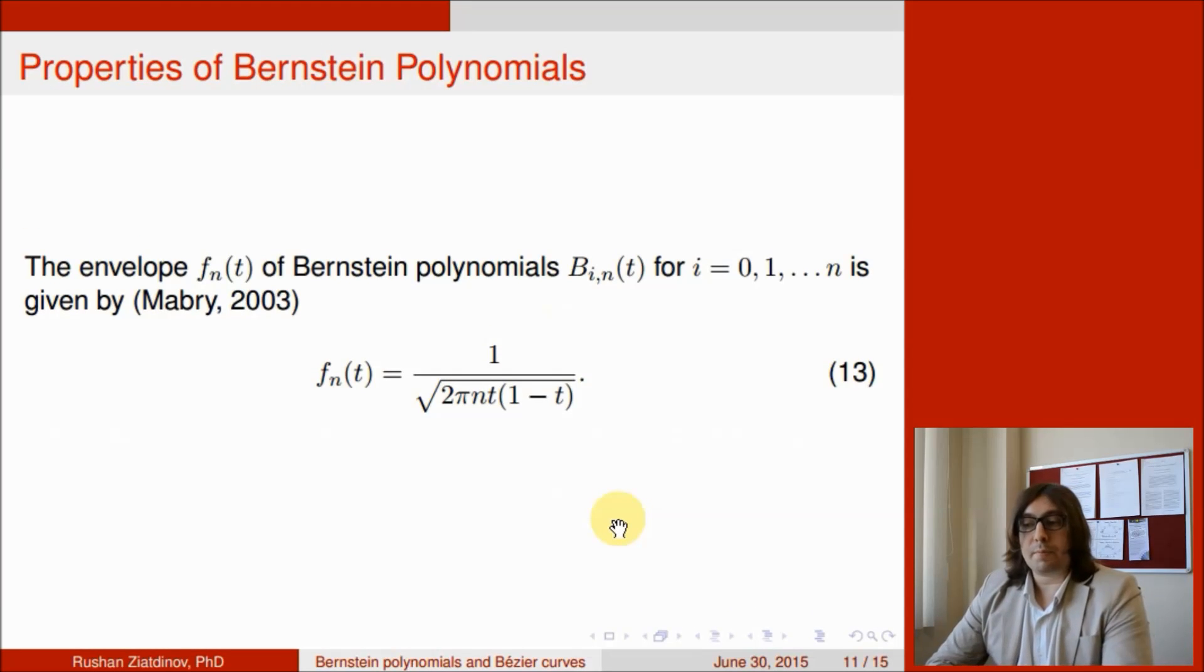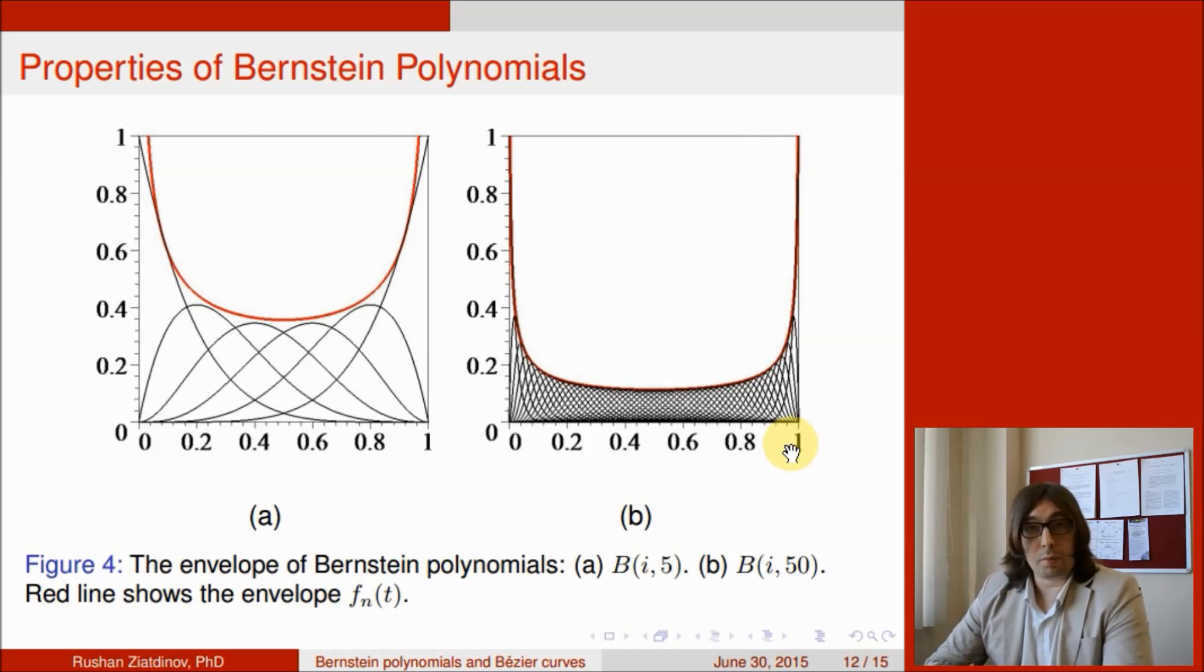The last and very interesting property of Bernstein polynomials shows us the envelope f of t of Bernstein polynomial b_i,n of t for i from 0 to n. The envelope was defined by Mabby in 2003 and is given by function defined in formula 13. Figure 4a shows the envelope of Bernstein polynomials b_i,5, so here we have 6 Bernstein polynomials because i starts from 0 to 5. The red graph is the envelope. Figure 4b shows envelope for Bernstein polynomial b_i,50.